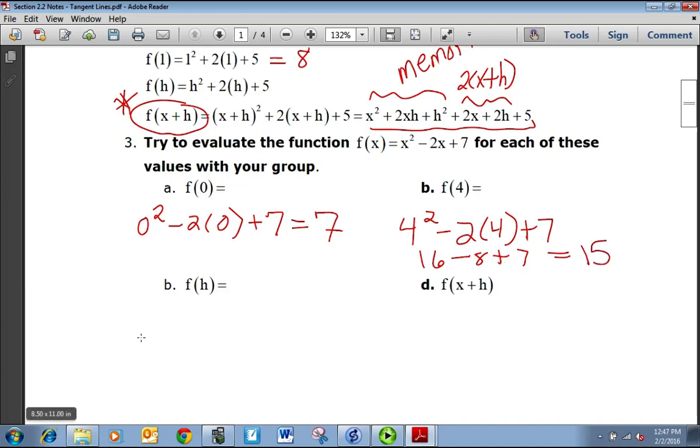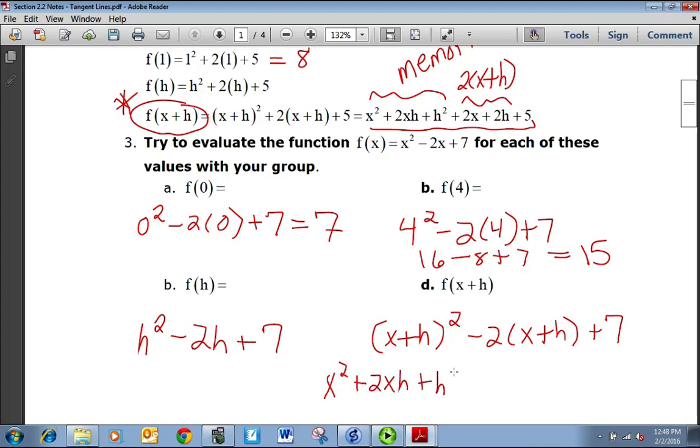Putting h in, I'm just going to get h squared minus 2h plus 7. And x plus h, I'll get x plus h squared minus 2 times x plus h plus 7. Now to expand that out, it's going to be x squared plus 2xh plus h squared. That's this part here. And distributing the negative 2, I get minus 2x minus 2h plus 7.